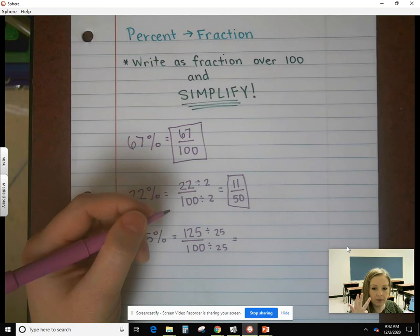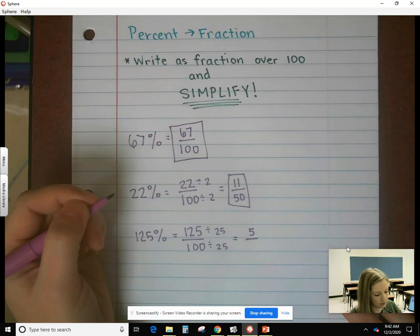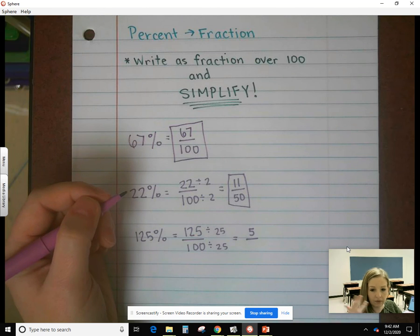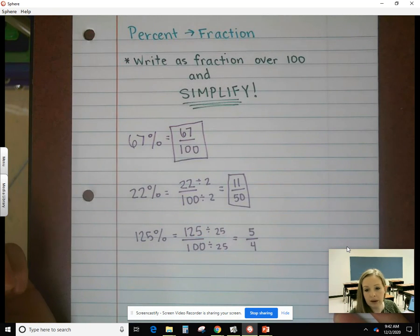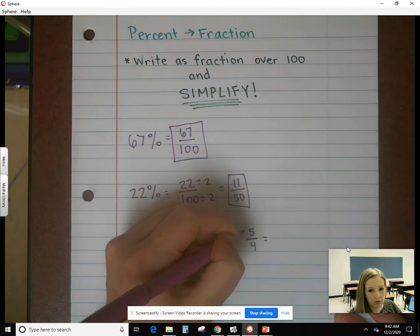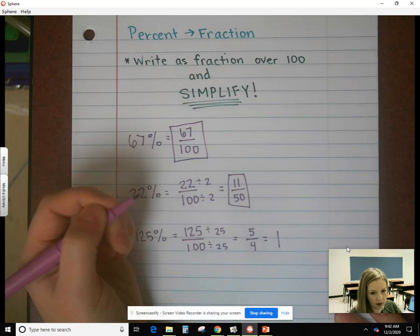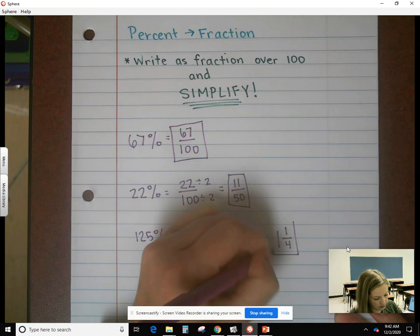25, 50, 75, 100, 125. So that goes in 5 times. 25, 50, 75, 100. So that goes in 4 times. That would be my answer, except it's still improper. So remember that 4 goes into 5 one whole time with 1 left over. The denominator stays the same.